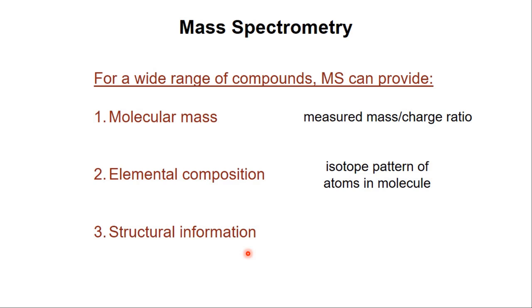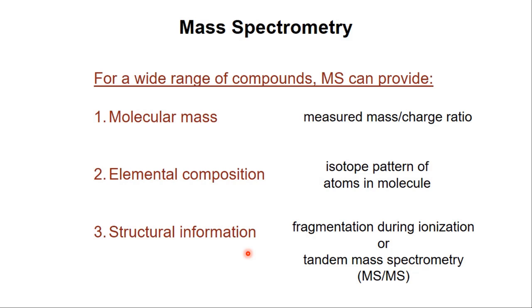Finally, mass spectrometers can provide structural information by determining the connectivity between different functional groups in a molecule. This information is obtained via fragmentation that can occur during certain ionization methods, or dissociation that's purposely caused in the context of a tandem mass spectrometry or MS-MS experiment. Tandem mass spectrometry will be discussed at the end of this presentation.